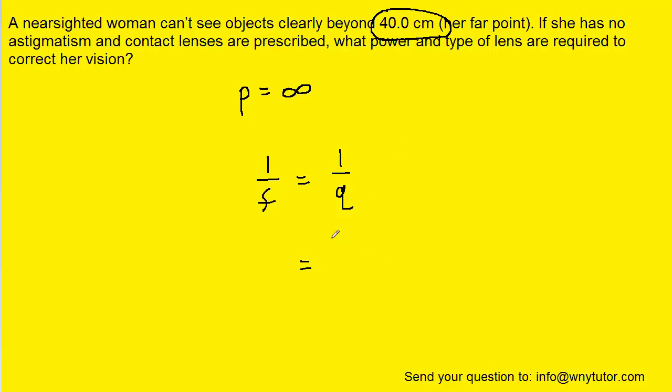That means we can plug in the image distance Q as being negative 40 centimeters. Note that in eyeglasses questions or contact lens questions, the image distances are always going to be negative values.